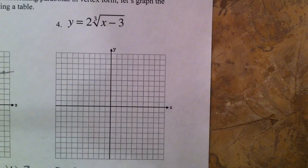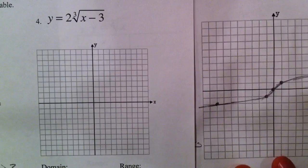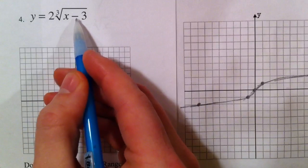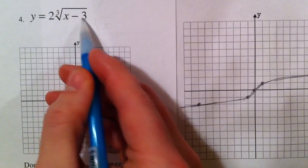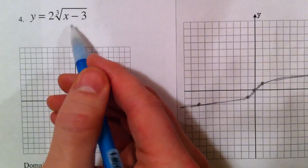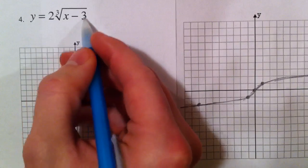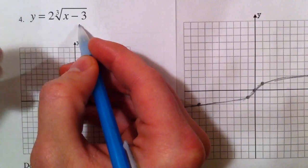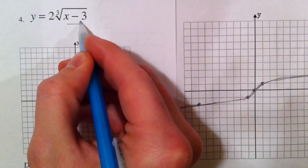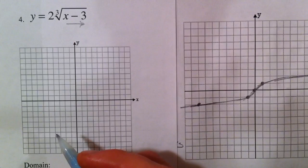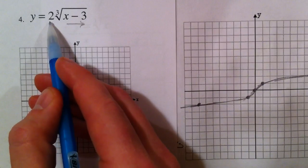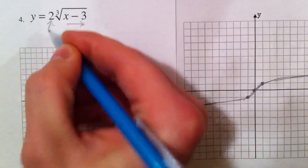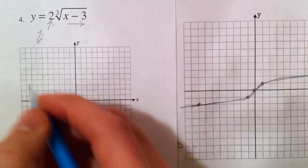Now the cube root graph. This minus three is inside with the x, so it's affecting it horizontally. Just like we did with parabolas, this is going to do the opposite of what our brains expect — we have to go to the right before we get to the same value, so it shifts to the right despite the minus. This two is going to multiply every value after you take the cube root, so it's a vertical stretch — it's going to stretch it up and down.